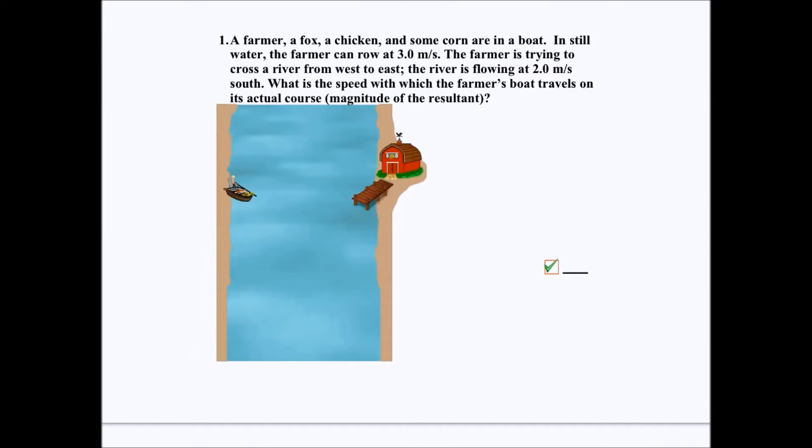Here we've got Mr. Hendrickson, I mean a farmer, a fox, a chicken, and some corn in a boat. And they're all going to go across the river, right? And the river is blowing them south at 2 meters per second. The farmer can row 3 meters per second to the east.